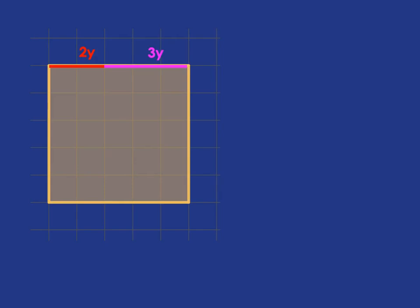So, what's the area of the square? Well, it's 2y plus 3y multiplied by 2y plus 3y. In other words, 2y plus 3y squared. And the question we're asking ourselves today is, is that going to be equal to 2y squared plus 3y squared?